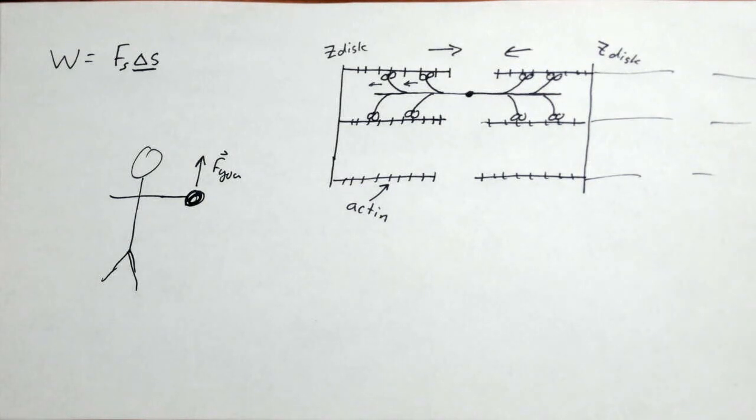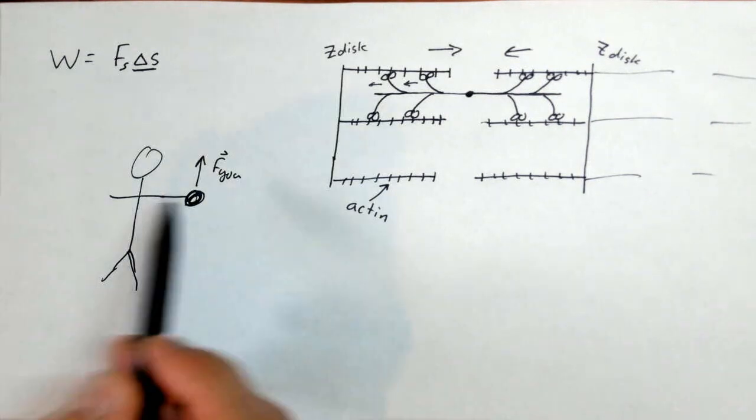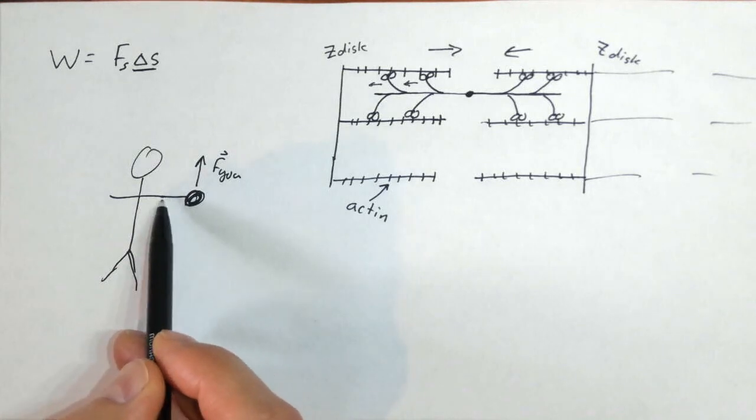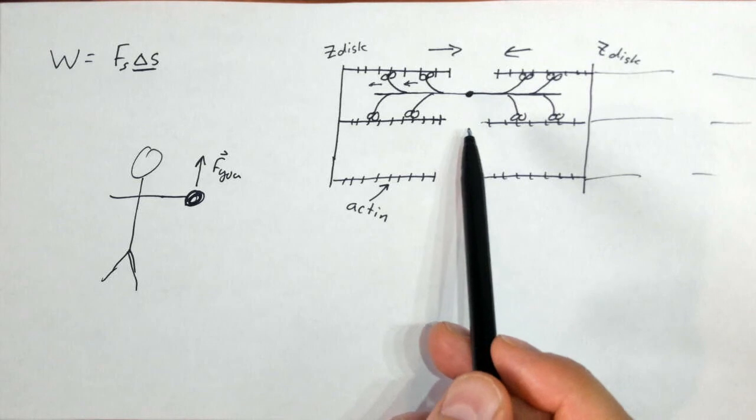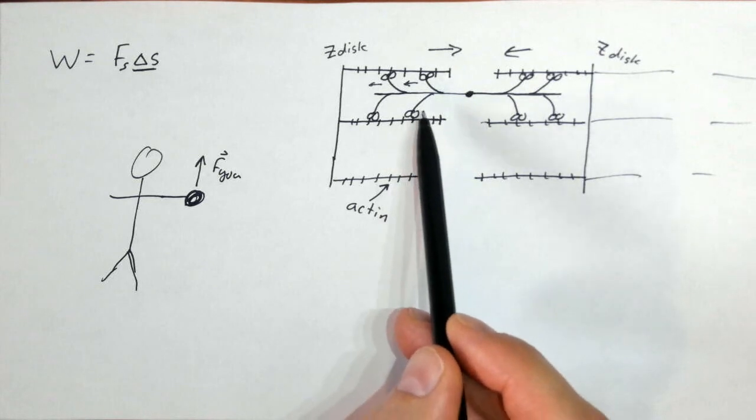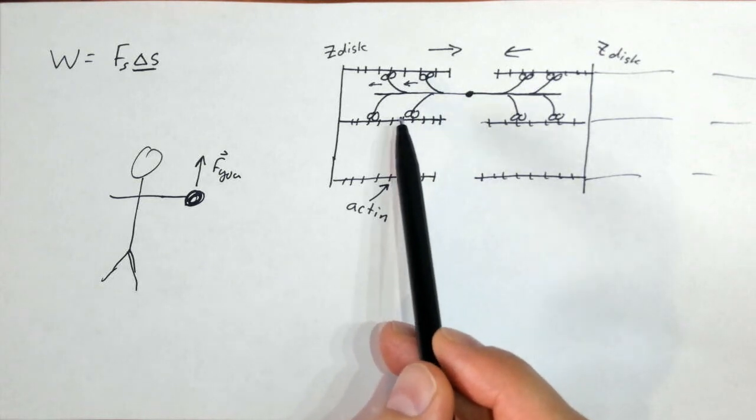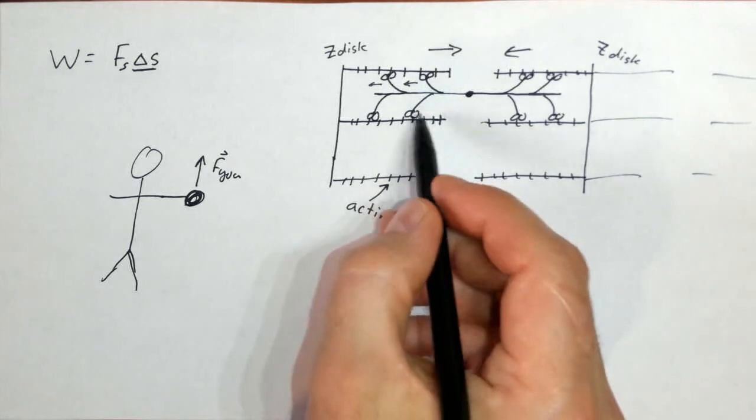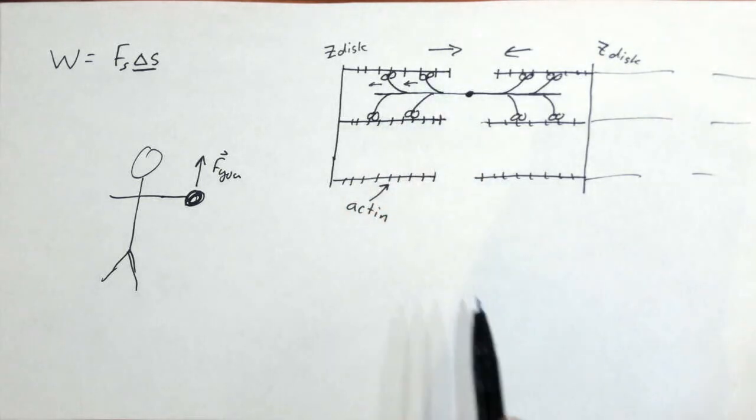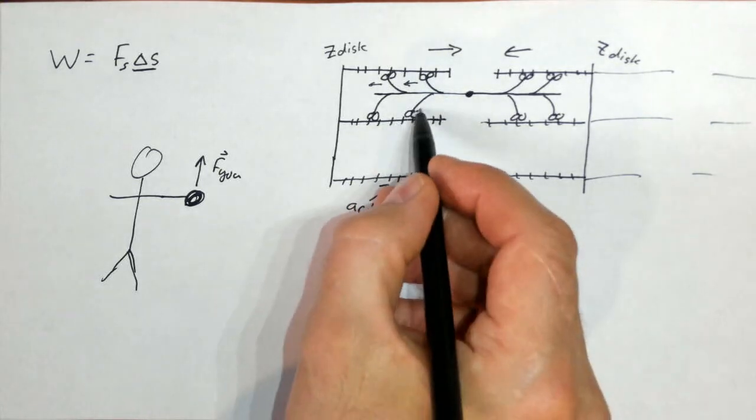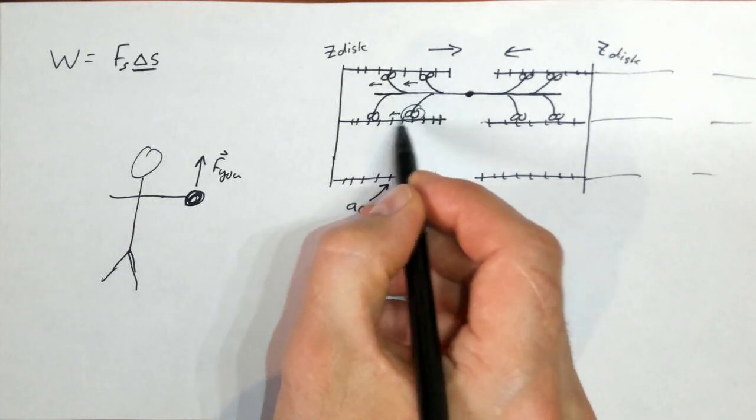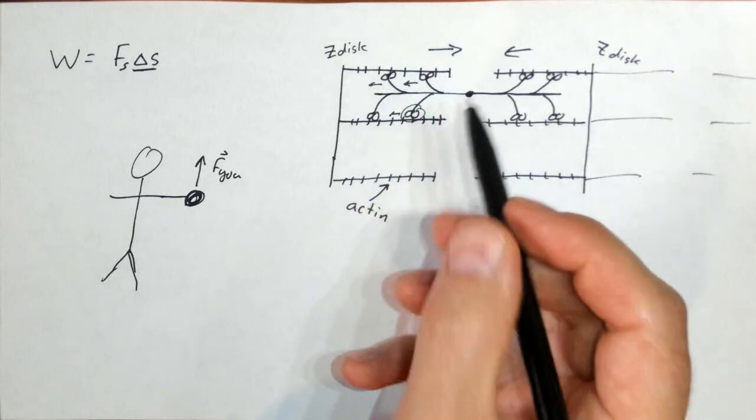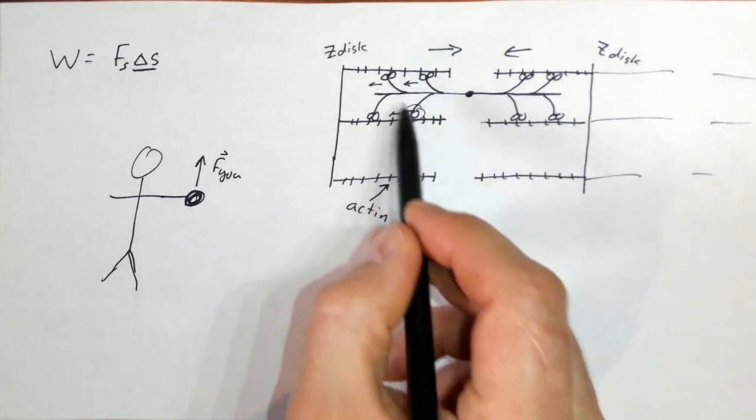Now, when you flex your muscle, and when this student here is holding that weight up, they're starting to sweat. They have millions of these muscles, these molecular motors walking at the same time. And these individually are slipping all the time. So this one right here might walk forward and then slip. And then walk forward and then slip. Walk forward and slip.